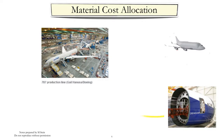For example, Boeing purchases large 787 components that are subcontracted out and then added to work in process inventory.